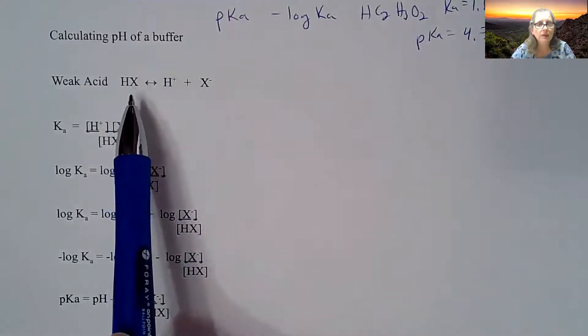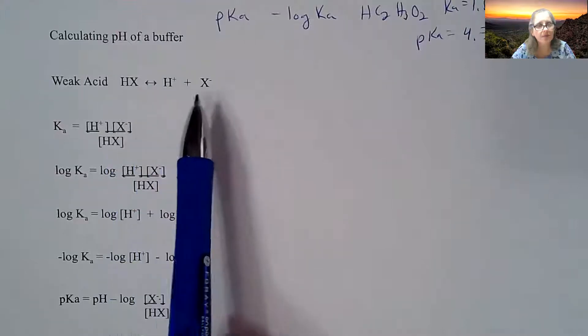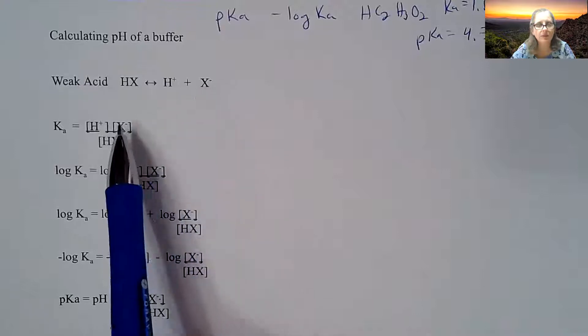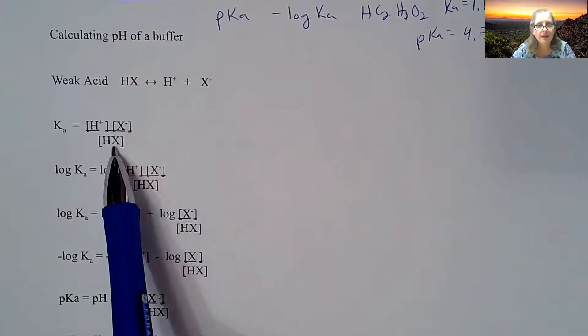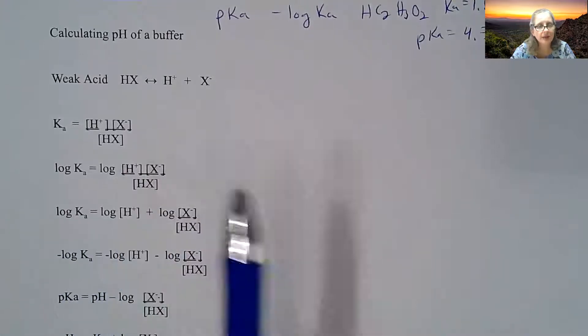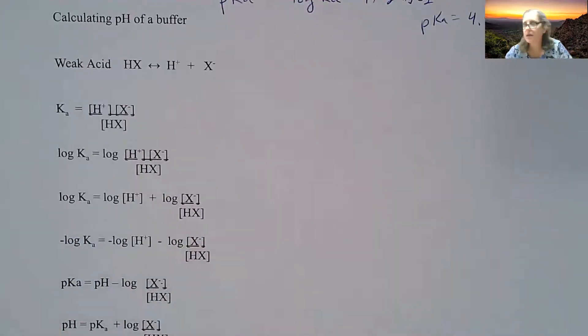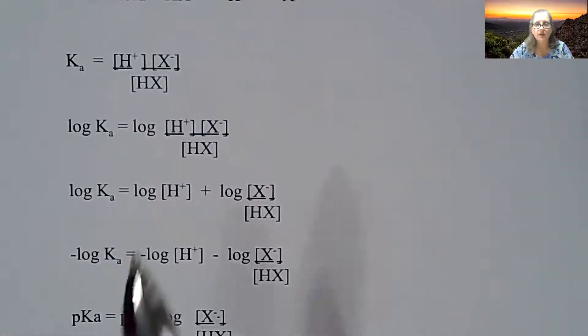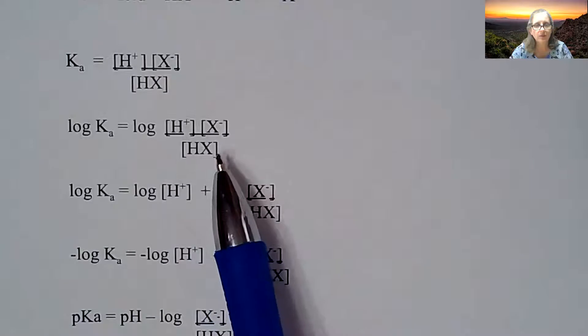So when we have a weak acid, and I'm using X here, I probably should use HA, but you could see it multiple ways. You can have the ions on top and then the acid on the bottom. If you take the log of both sides, it would be the log Ka, and then the log of this expression as well.